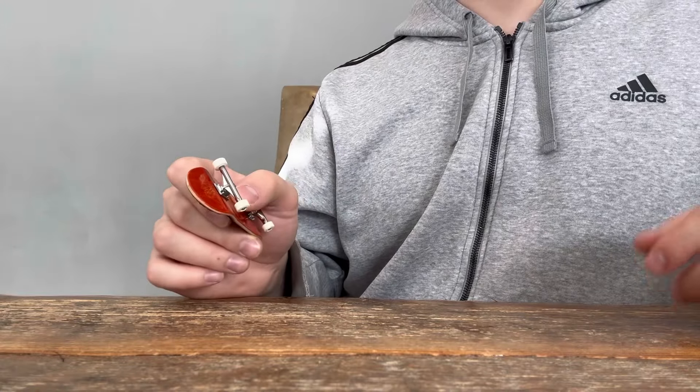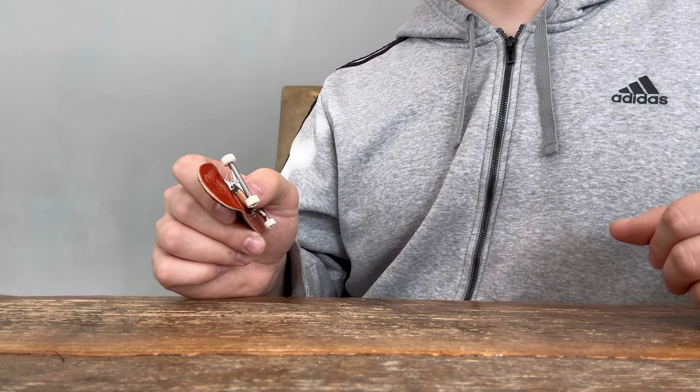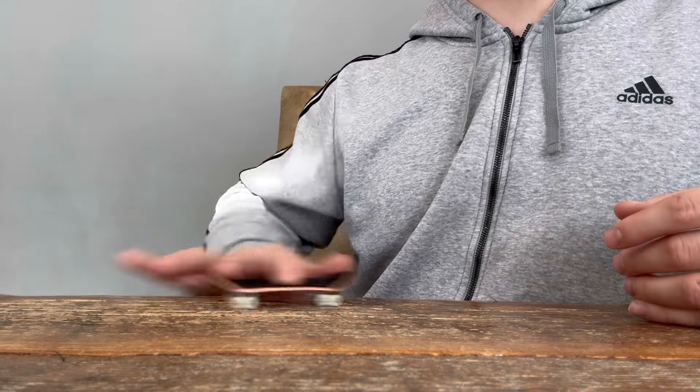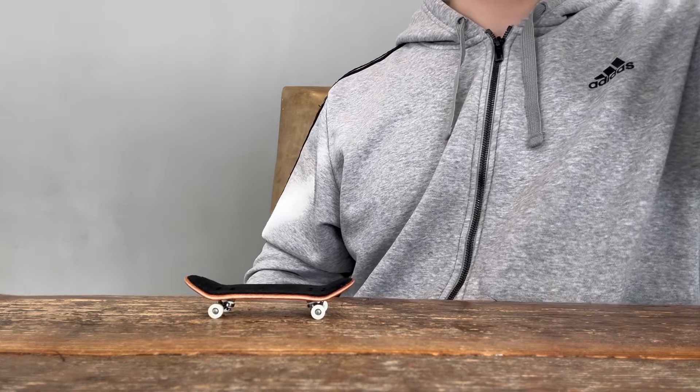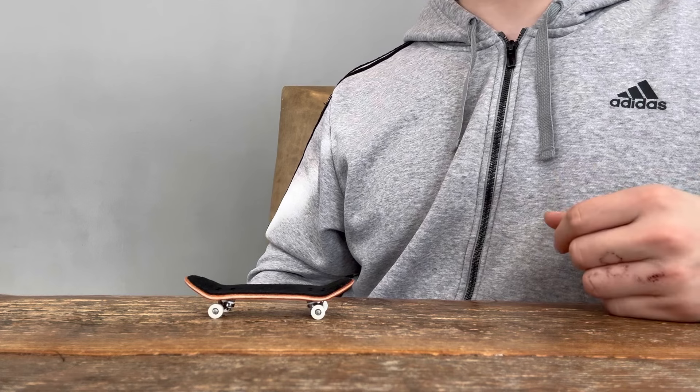So now that you have a good fingerboard down, it's time to get the tutorial started. The number one trick you want to have down is a basic ollie. Very basic trick but it's going to make this trick a lot easier to do in the long run and when it comes to just learning.